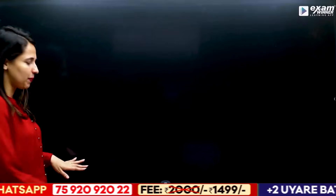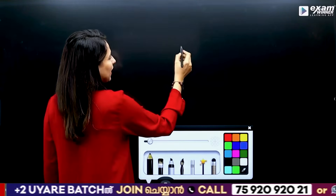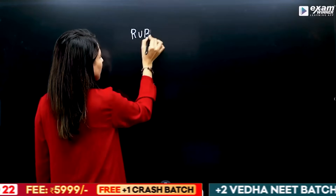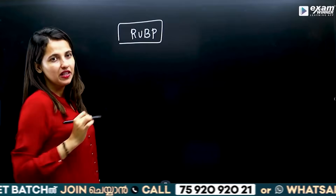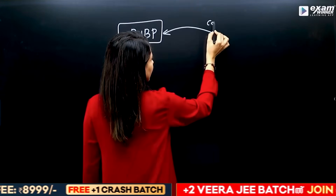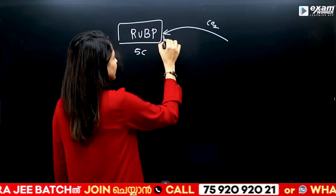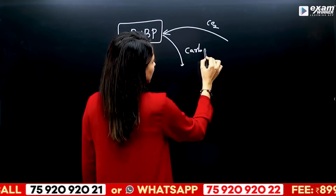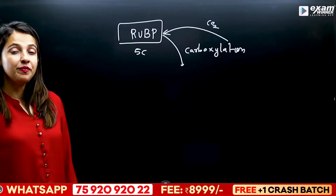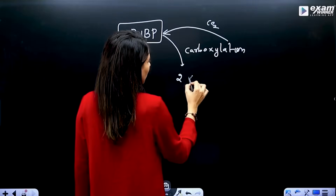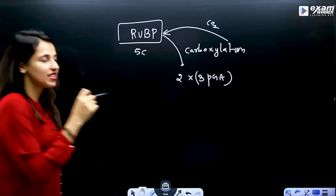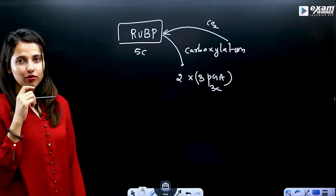This is called the Calvin cycle. Carboxylation is the first stage — RuBP is the primary carbon dioxide acceptor, which is a 5-carbon compound. Carbon dioxide is fixed here. This carboxylation produces an intermediate, and the first stable product is 2 molecules of 3-phosphoglycerate, which is a 3-carbon compound.